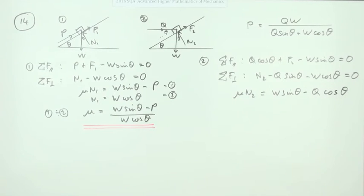That one just says N2 equals, and they're both across as positives, Q sin θ plus W cos θ.